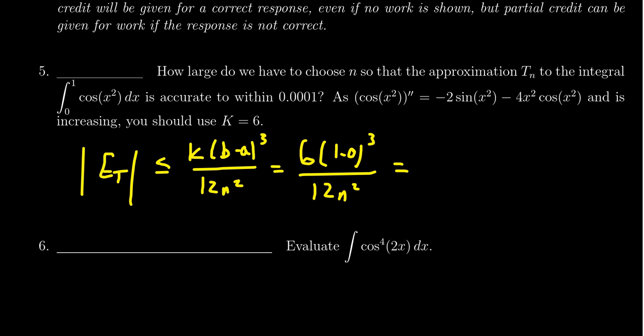We can simplify this a little better. Six goes into twelve two times, and one cubed on top becomes one. This simplifies to 1/(2n²), and we need this to be less than or equal to one ten-thousandth, or 1/10⁴.